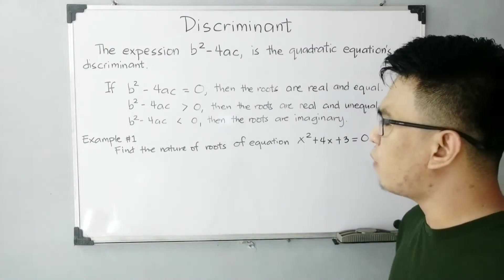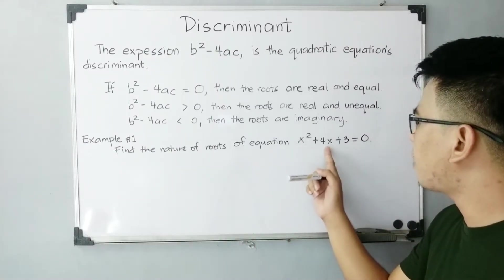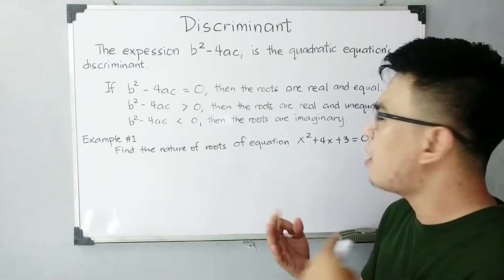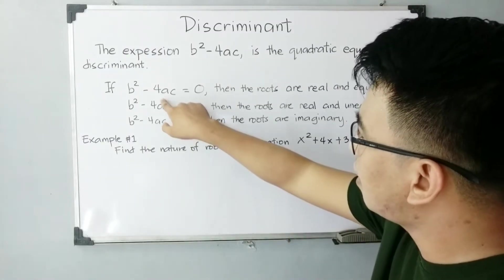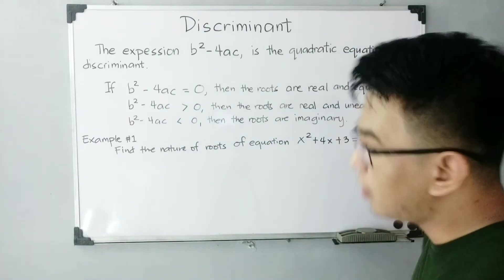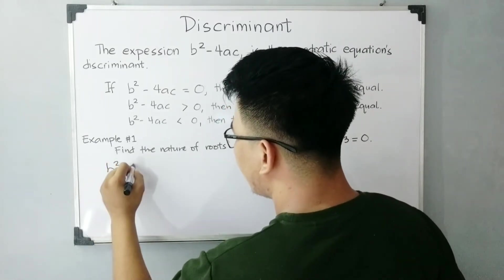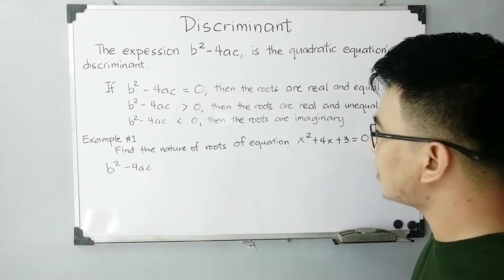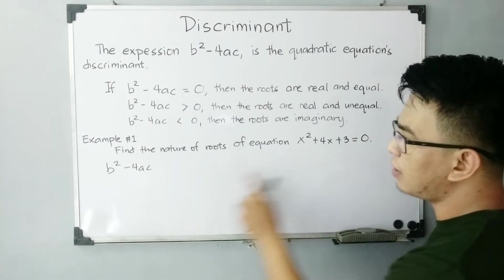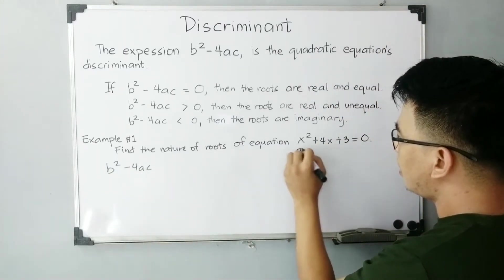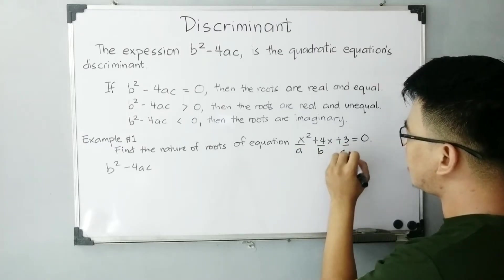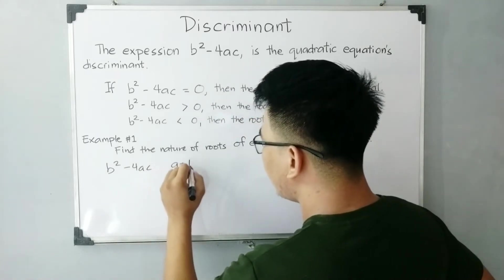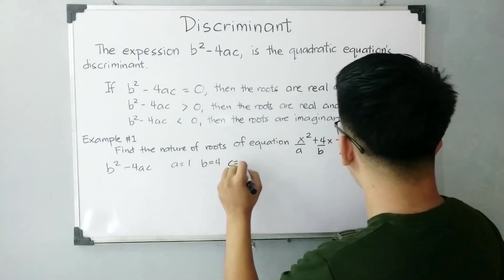Let's have example number one. Find the nature of roots of x squared plus 4x plus 3 equals zero. Are they real, real and equal, or are they imaginary? We will use this by evaluating b squared minus 4ac. Given this equation, we need to find first the values of a, b, and c — those are the coefficients, and c is the constant. So a is equal to 1, b is equal to 4, and c is equal to 3.